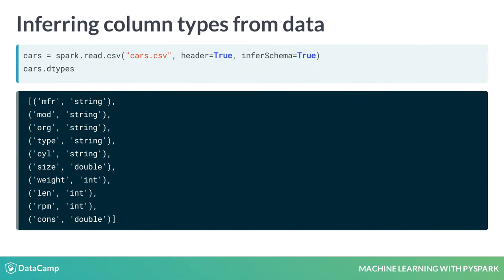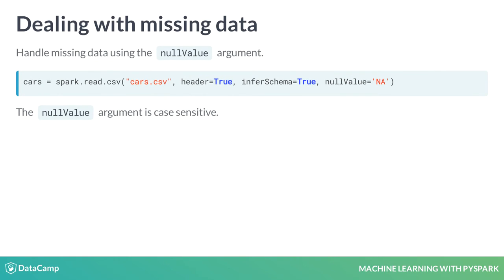Using this approach, all of the column types are correctly identified, except for cylinder. Why? The first value in this column is NA, so Spark thinks that the column contains strings. Missing data in CSV files are normally represented by a placeholder, like the NA string.